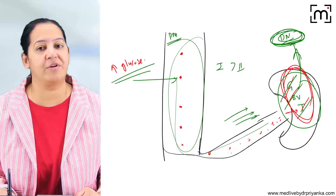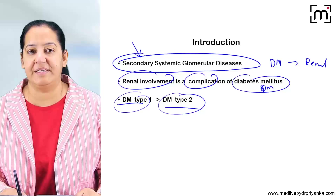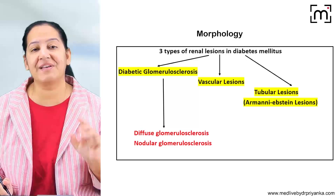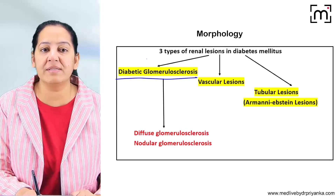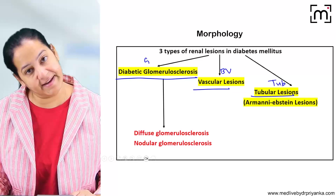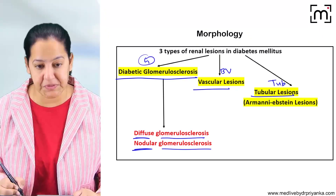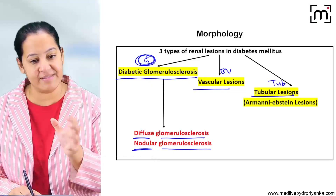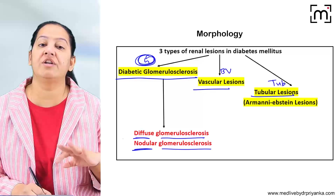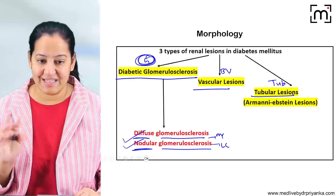Diabetic nephropathy is more commonly seen in type 1 diabetes compared to type 2. Now let's start the morphology. The three structures involved in the kidney are: number one glomerulus, number two blood vessels, and number three tubules. In the glomerulus there are two patterns — diffuse and nodular glomerulosclerosis. Diffuse is more common; nodular is less common.